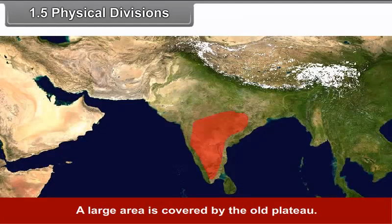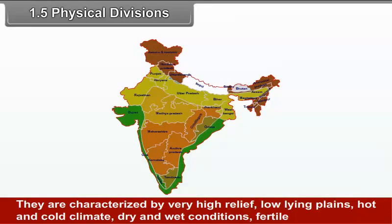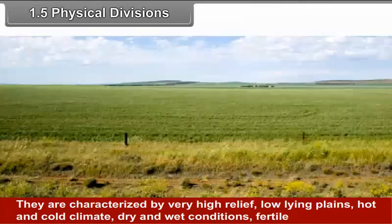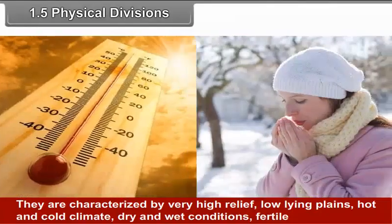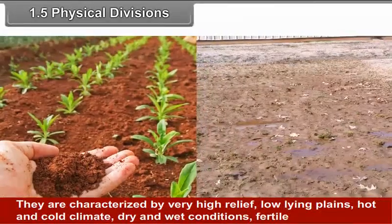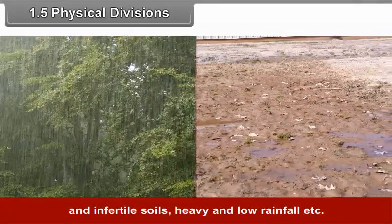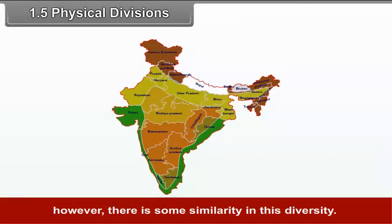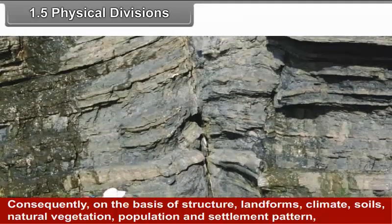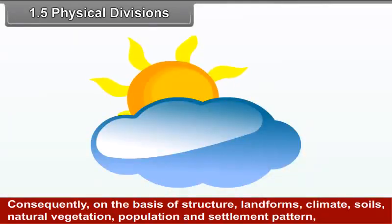India, due to its large extent, has great geographical diversity. A large area is covered by the old plateau. The remaining divisions are relatively younger. They are characterized by very high relief, low-lying plains, hot and cold climate, dry and wet conditions, fertile and infertile soils, heavy and low rainfall, etc.